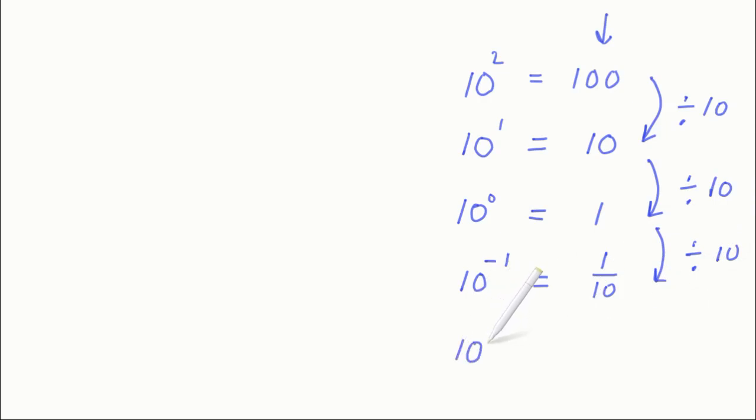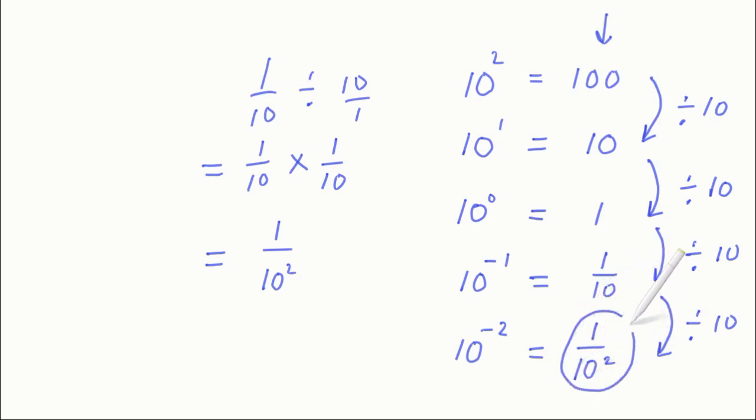10 to the minus 2, decreasing the power again by 1, means we divide that 1 tenth by 10 again. 1 tenth divided by 10—that 10 is really 10 over 1. When you're dividing by a fraction, you change the divide to times, flip the fraction upside down, and multiply those fractions together. You end up with 1 on 10 squared, and that's what we get here.